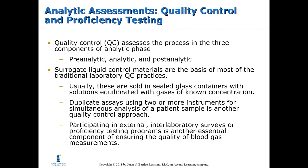Quality control assesses the process across three components of the analytical phase: pre-analytic, analytic, and post-analytic. Surrogate liquid control materials are the basis of most traditional laboratory QC practices — usually solid, sealed glass containers with solutions equilibrated with gases of known concentration. Duplicate assays using two or more instruments for simultaneous analysis of patient samples is another QC approach. Participating in external inter-laboratory surveys or proficiency testing programs is another essential component of ensuring the quality of blood gas instruments.